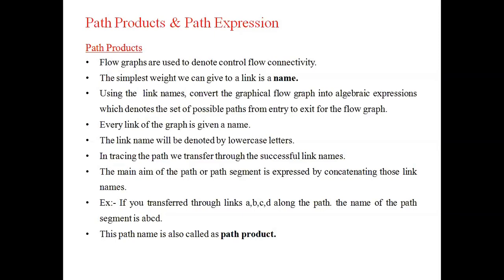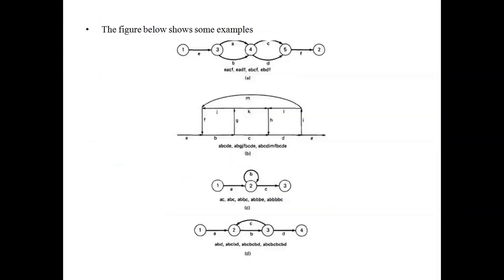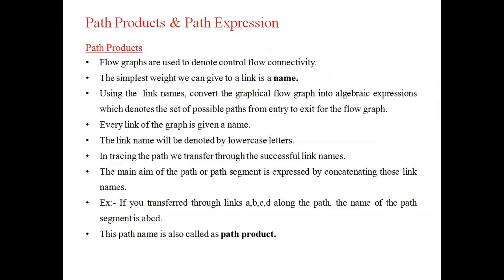First, we need to know what is a path. Generally, a path refers to a diagram representation. Path is nothing but the flow of nodes or flow of links, from entry state to exit state. That flow is represented as a path. So a path is a graph or flow from entry to exit state.